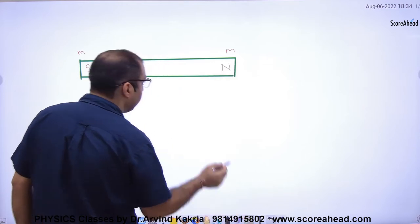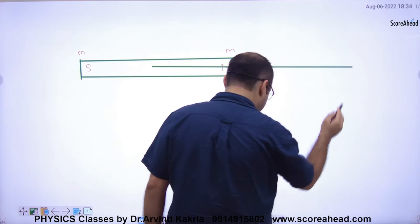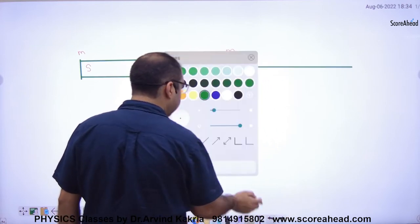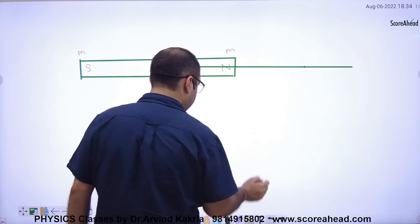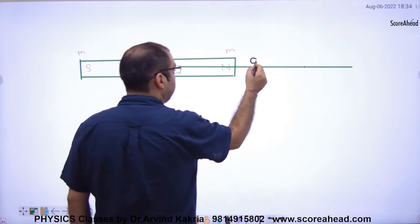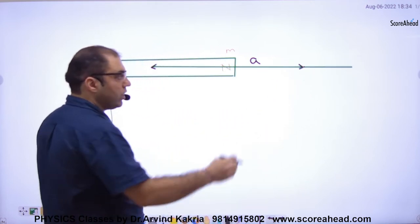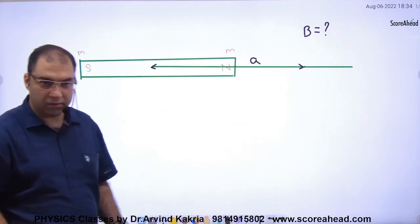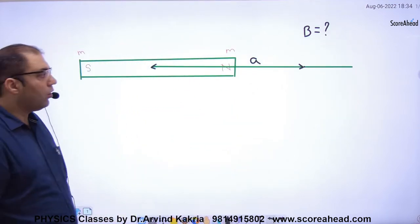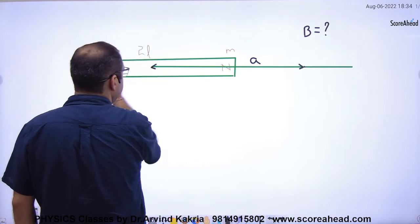Next is, in this axis, distance from center. So in this axis, a distance, this is a. What is the distance? This is the distance, and the total length of this magnet is 2l.